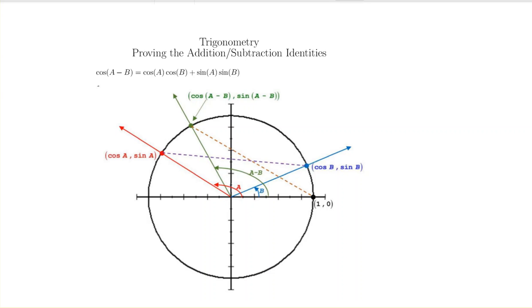The way I'm going to do this is I'm going to start by proving my difference, or subtraction formula, for cosine. From here, this is going to be the hard work. Everything else will fall nice and easy, just like any other proving an identity problem you might do.